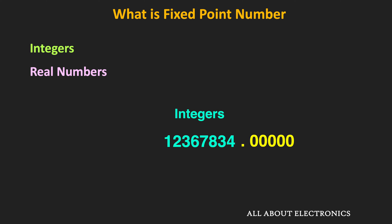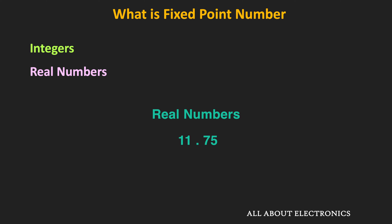By default, the position of the decimal point is at the end of the least significant digit. Since there is no fractional part, we typically do not represent this decimal point, but we can say there is a decimal point on the right-hand side of the least significant digit, and this position remains fixed. Similarly, for real numbers, the position of the decimal point is just before the fractional part. For example, 11.75 is a real number where 11 is the integer part and 75 represents the fractional part. When real numbers are represented in fixed point representation, the position of the decimal point remains fixed.